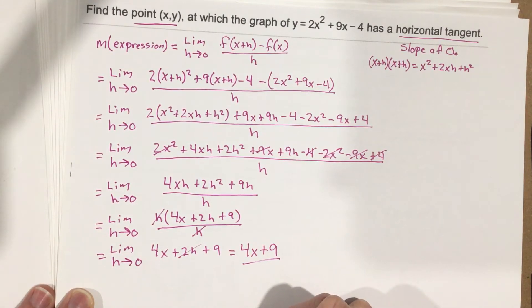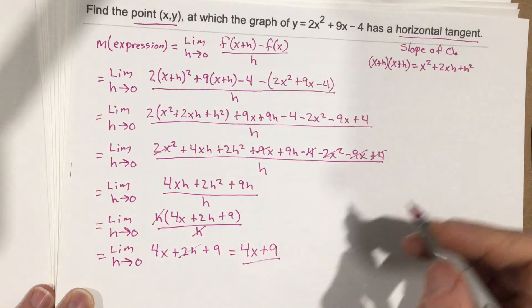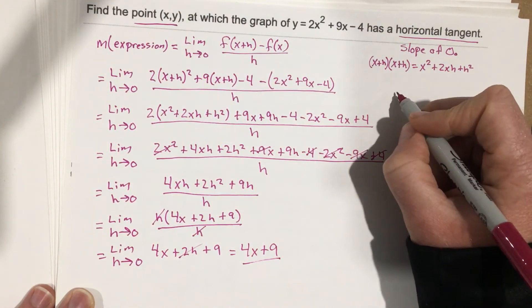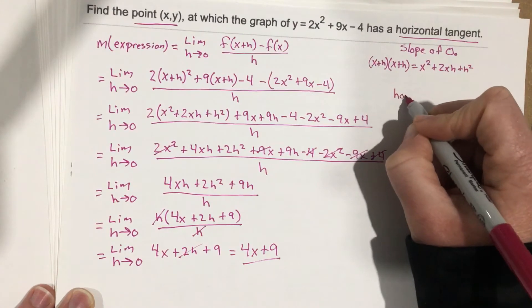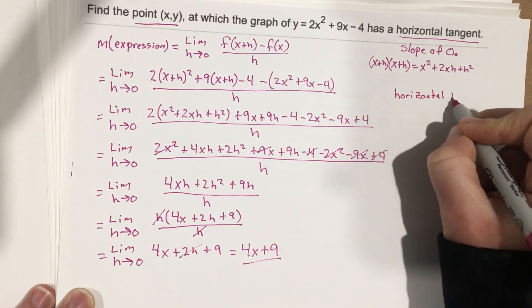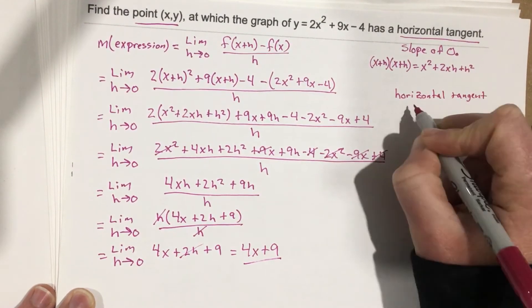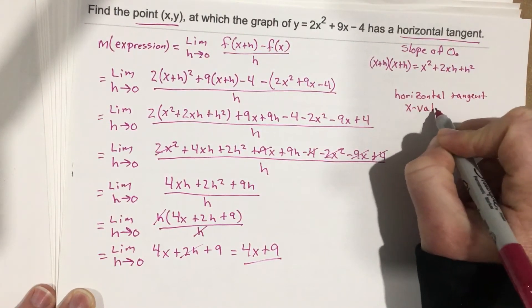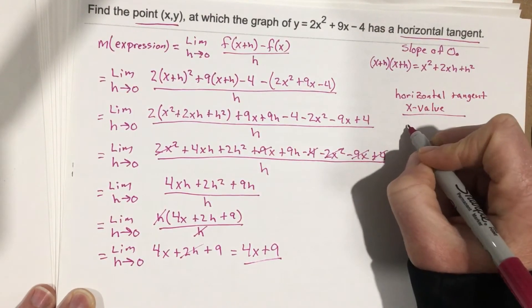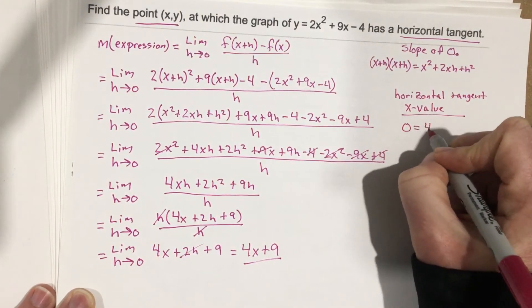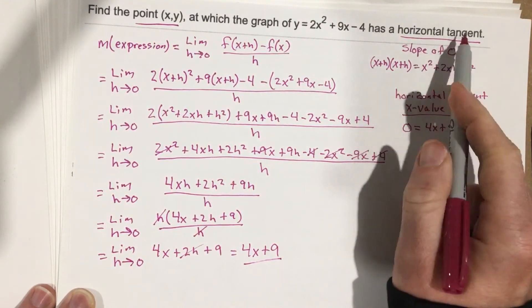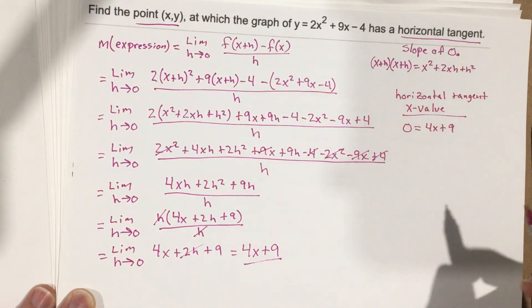Solve for x, and that'll give us the x coordinate where that occurs. So we're going to find the horizontal tangent x value. That's what we're going to find here. So how do we do that? We say 0 equals 4x + 9. Remember, 0 is that slope of a horizontal tangent. If it's a horizontal line, it's got a slope of 0.